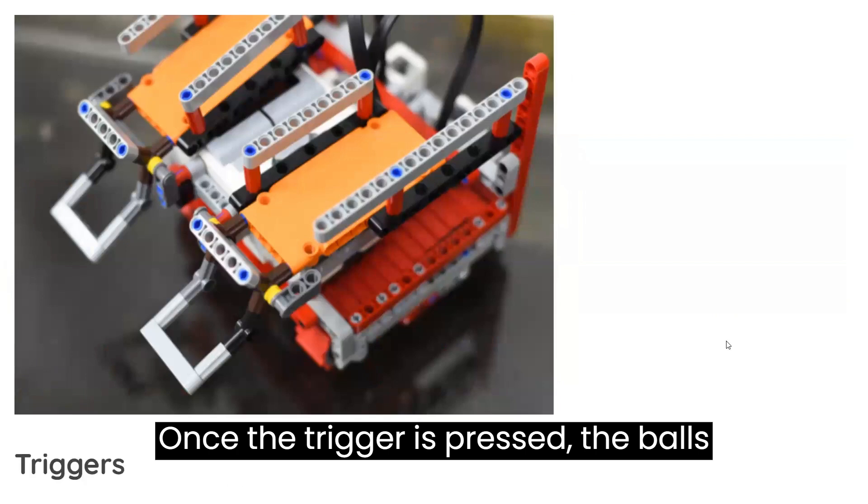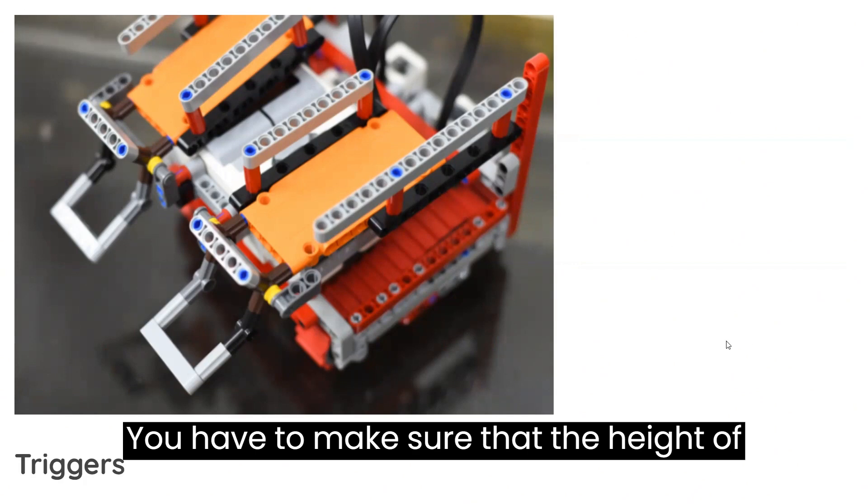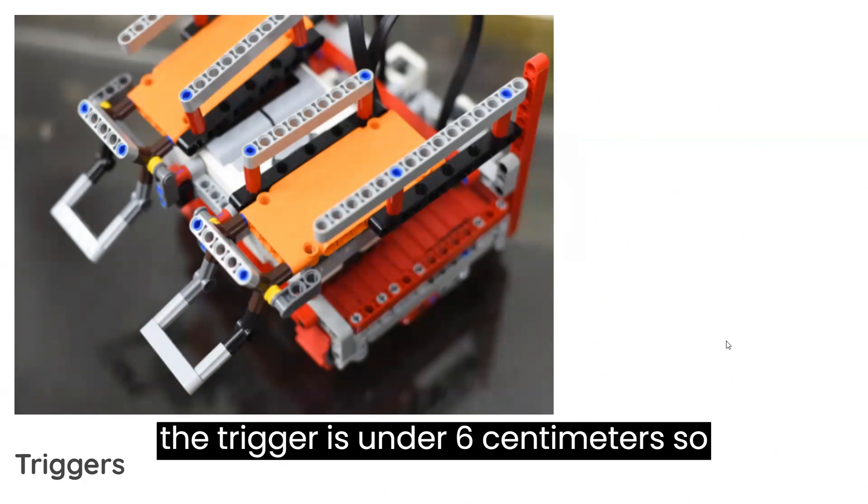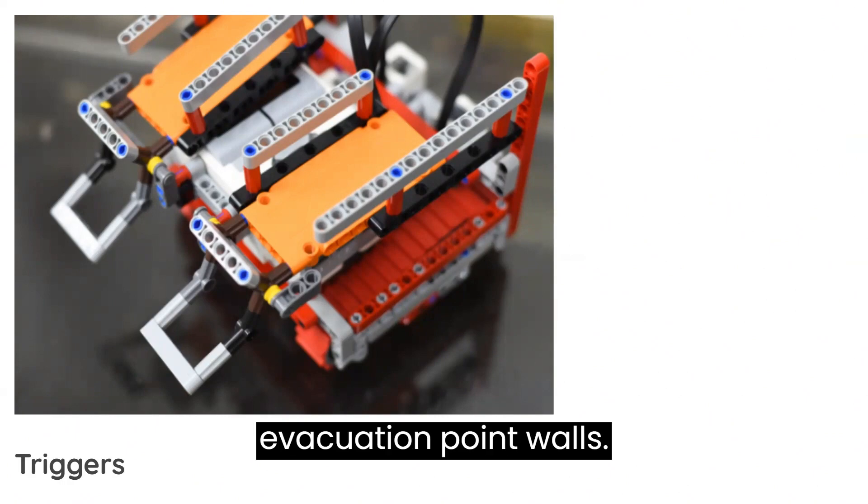Once the trigger is pressed, the balls fall out of the robot's storage channels. We have to make sure that the height of the trigger is under 6cm so that it can be activated with the evacuation point walls.